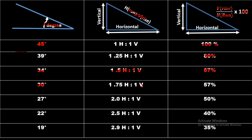Similarly, 30 degrees equals 1.75 horizontal and 1 vertical and equals 57%. Similarly, as you can see here 27 degrees, 22 degrees, 19 degrees, and 19 degrees equals 35%. By using these formulas, you can convert these values into degrees or percentage as desired.